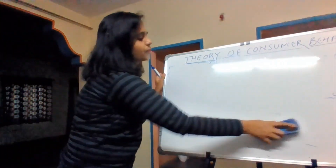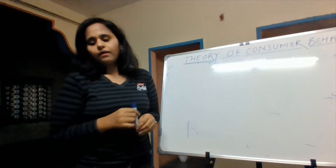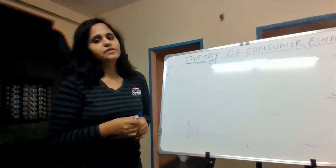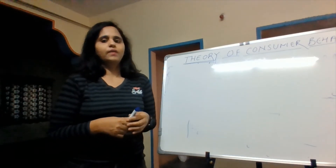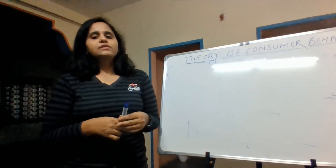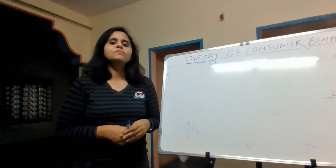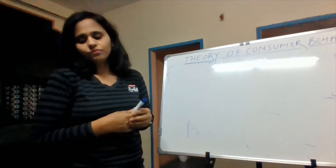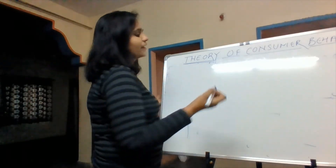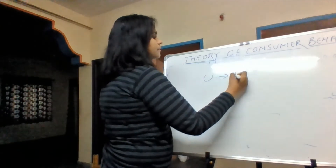So we have seen four assumptions as part of the cardinal approach. The first assumption was that consumers are rational. The second assumption was that utility is measured in terms of quantity. The third assumption was that goods are good — you consume good, it is good. The fourth assumption is that marginal utility is diminishing. And the fifth assumption is that the utility of money is always constant — another way to say this is that utility is measured in terms of money.